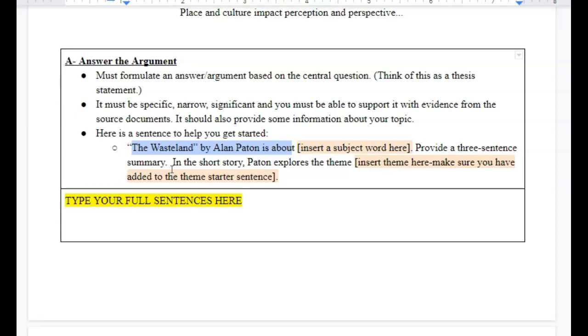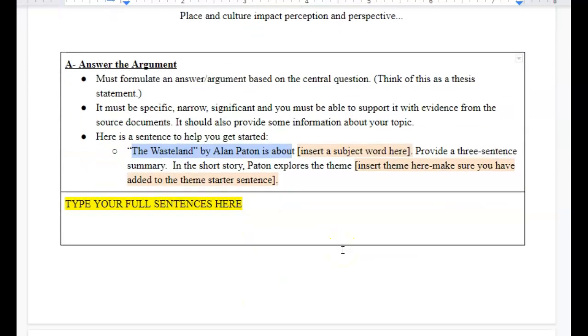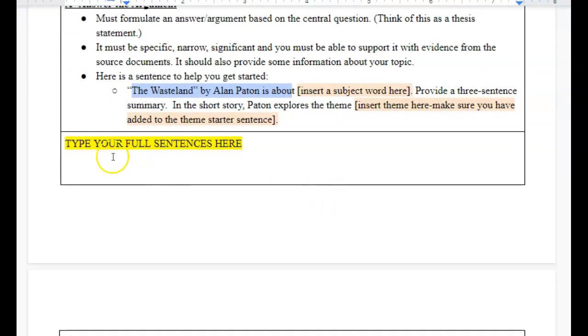your final sentence in this A part will say, in the short story, Paton explores the theme, then you are going to put your theme there. Explores the theme, place and culture impact perception and perspective because blah, blah, blah, period. You're going to write that whole thing in this box right here. This is your A box.